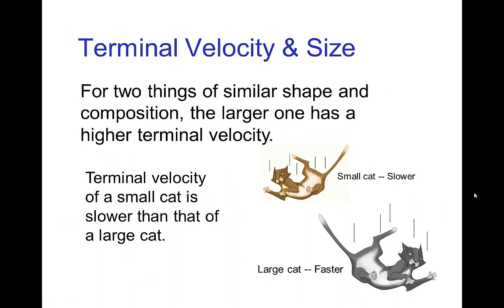That was for an average size cat, but if we have a small cat versus a large cat, the large cat will have a higher terminal velocity than the small cat. In fact, if we have two things that have similar shape and composition, then the larger one has the higher terminal velocity.